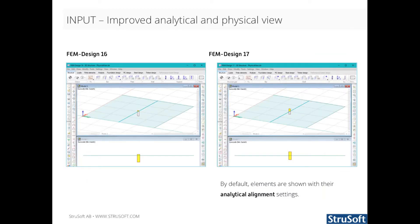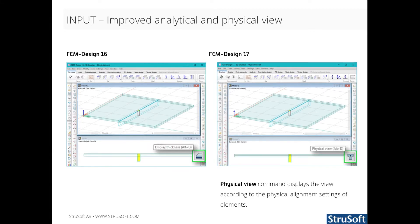A major change has been done to the analytical and physical view of the elements. In FemDesign 17, elements are shown by default with their analytical alignment settings, opposite to FemDesign 16 where the physical view was shown. Also, there is no more display thickness command. Instead, there is a new command called physical view, which will display the physical view of an element based on its physical alignment settings.